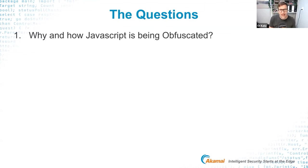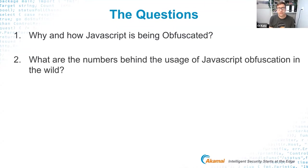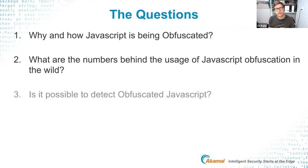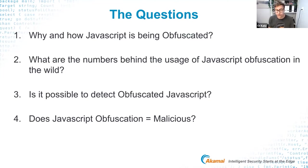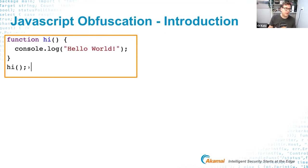The first question was why and how JavaScript is being obfuscated. The second was: what are the numbers behind usage of JavaScript obfuscation in the wild — is my research relevant given the volume of samples? Third, is it possible to detect obfuscated JavaScript? And fourth — and I'll give you the answer now — does JavaScript obfuscation equal malicious? The answer is no. We'll go into detail, but the basic concept is that obfuscation can appear in both benign and malicious files.